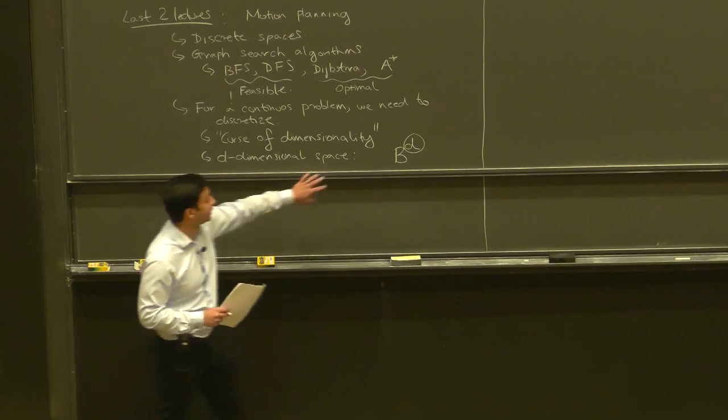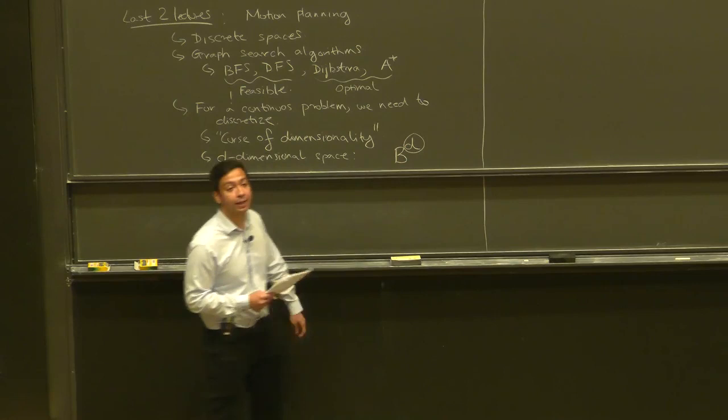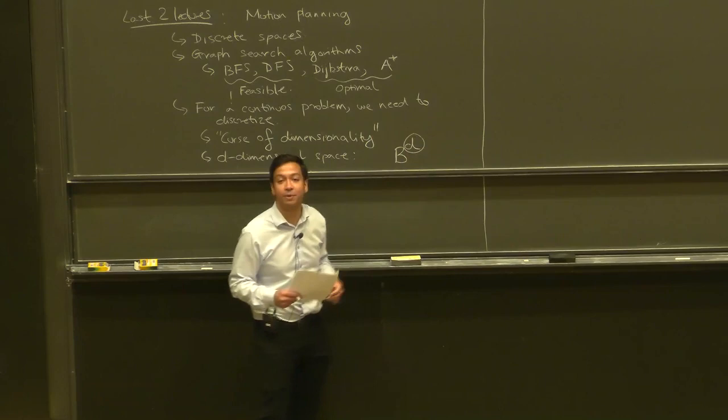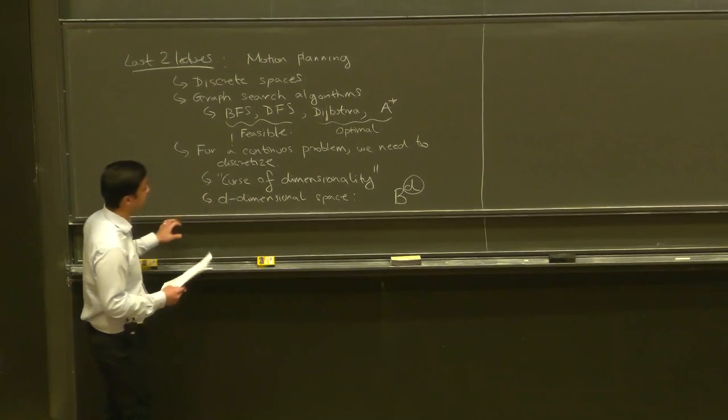So if you have even a moderately high-dimensional continuous planning problem, the number of vertices in your graph search problem gets extremely large. At some point these numbers get just silly — larger than the number of atoms in the observable universe. So yeah, this is the main challenge: the curse of dimensionality.